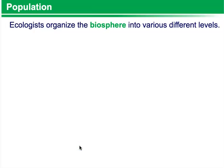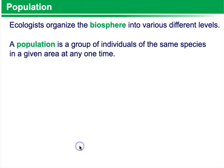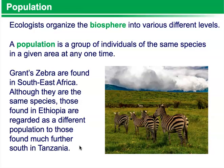Populations. Ecologists organize the biosphere into various different levels. Recall the biosphere is all of the living organisms all the way down into our planet and floating around up in our atmosphere that exist on our planet. A population is a group of individuals of the same species in a given area at any one time. Grant's Zebra are found in Southeast Africa. Although they are the same species, those found in Ethiopia are regarded as a different population to those found much further south in Tanzania.